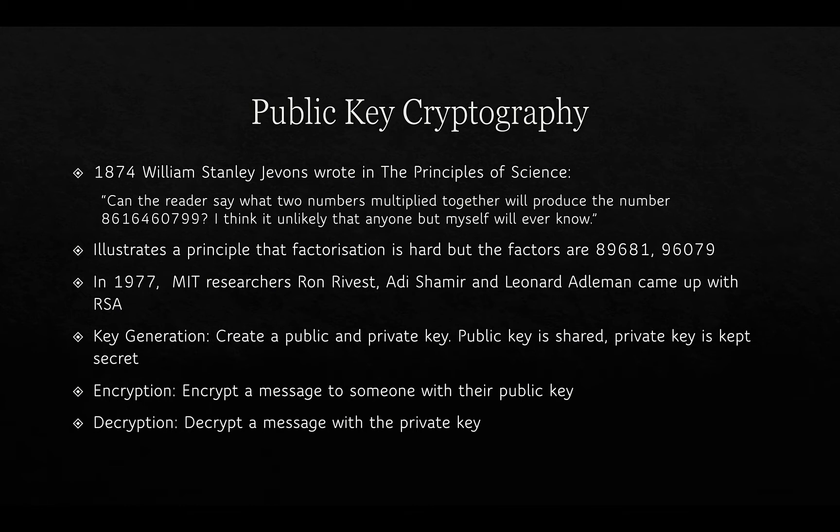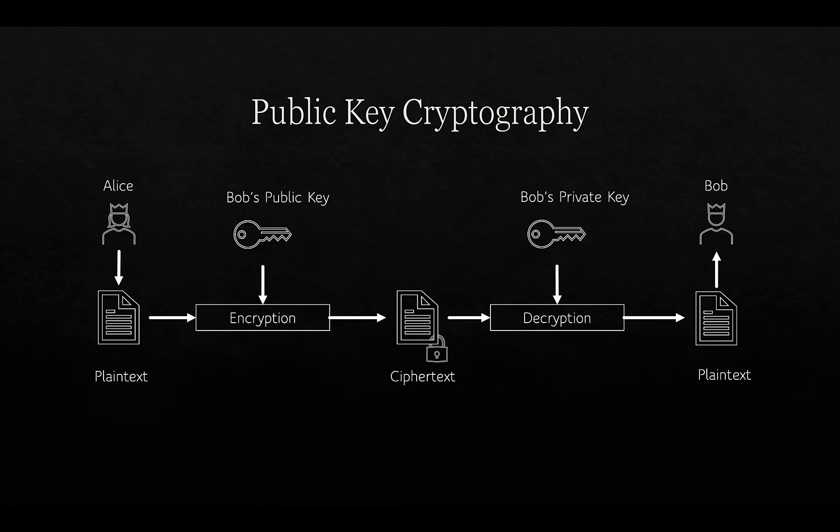In 1977, MIT researchers Ron Rivest, Adi Shamir, and Leonard Adleman came up with RSA, which took the idea of the difficulty of factorizing large numbers and created a public key cryptography algorithm. In this algorithm, a public and private key is generated. The public key is shared but the private key is secret. Encryption is done by encrypting a message using somebody's public key, and decryption is done by decrypting a message with the private key.